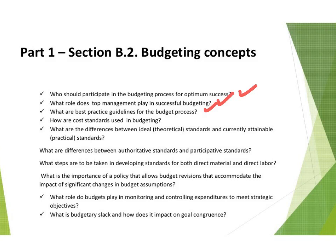The use of standard costs usually comes into many budgeting questions — the setting of standards, whether they be ideal, theoretical, or practical. What is the difference between authoritative standards and participative standards? What role does the budget plan play in monitoring and controlling expenditures to meet strategic options? Understand what budgetary slack is and how it impacts on goal compromise.